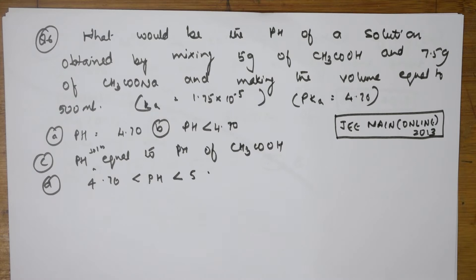Now, let us see the next question. Here, ionically equilibrium basically. What would be the pH of a solution obtained by mixing 5 grams of acetic acid and 7.5 grams of sodium acetate and making the volume equal to 500 ml? They have given us Ka and pKa value, both values. This is your 2013 online exam question and they have given us 4 options. Now, I have to find what would be the pH of the solution.